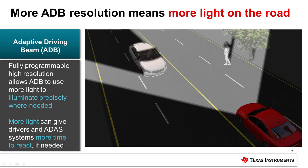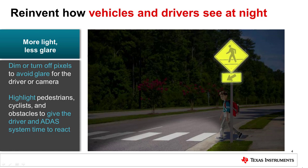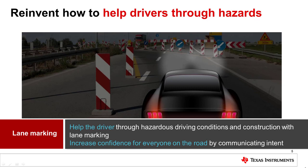High resolution can also create smooth gradient transitions in the light shape to avoid rapid jerking motion of light that can be seen in low-resolution ADB options. Use the full programmability of high-resolution headlights to reinvent how vehicles and drivers see at night. Highly reflective road signs can glare drivers and oversaturate camera sensors. With high-resolution DLP technology, the headlight can dim or turn off pixels to avoid glare for the driver or camera while highlighting pedestrians, cyclists, and obstacles to give the driver and ADAS systems time to react.